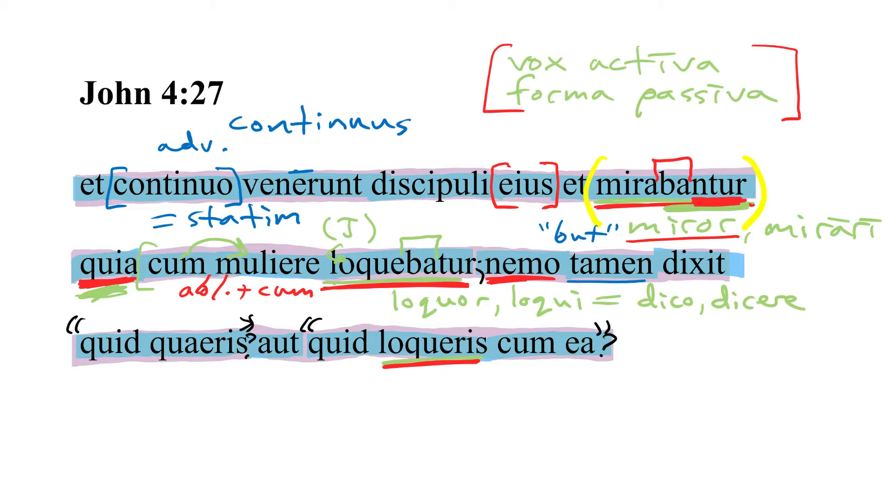Quid, what, are you seeking? What are you looking for? Or even more broadly we could say what do you want? Now the quaeris is second person singular active present indicative here is referring to Jesus. What is it that you're seeking with her? Or what is it that you're trying to accomplish here?